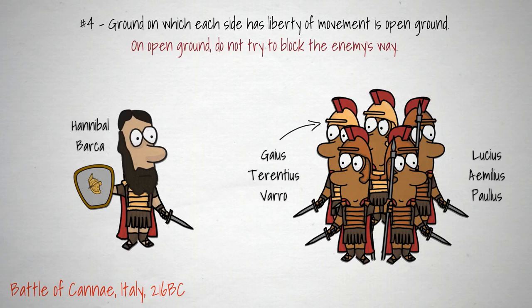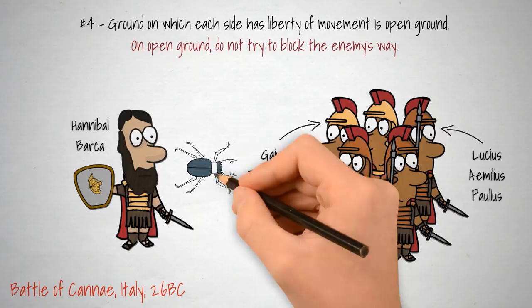When the two forces met each other, Hannibal had weakened his infantry in the centre and ordered them to implement a controlled retreat. Using a pincer movement, Hannibal then managed to surround the entire Roman army with his quicker, stronger flanks and kill nearly all of them.